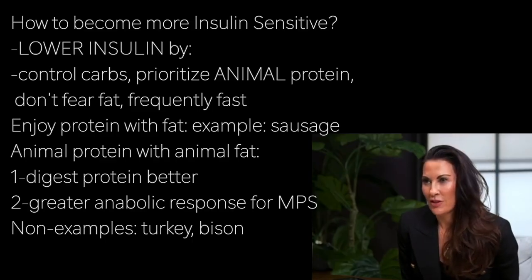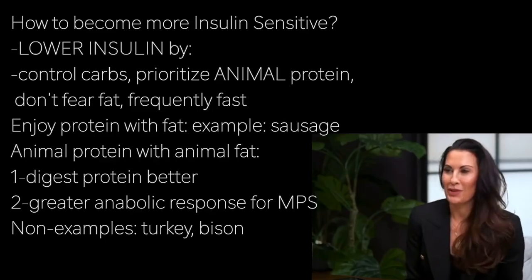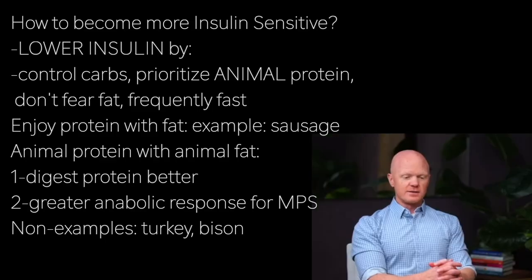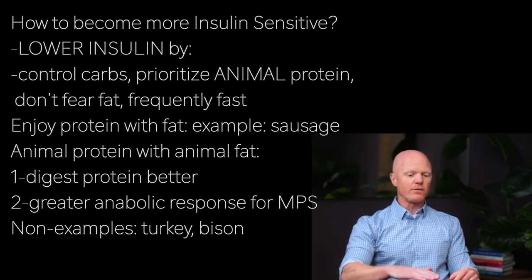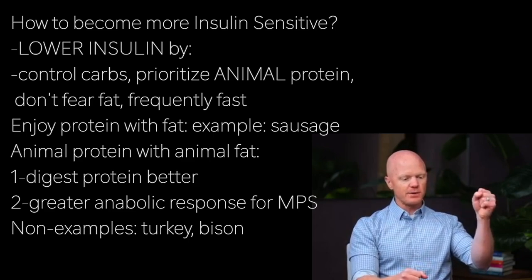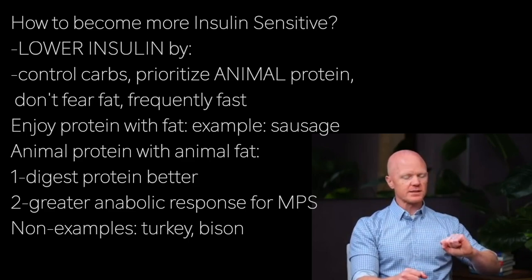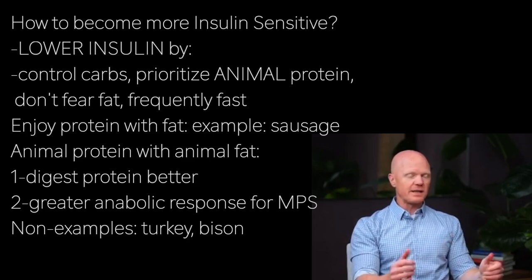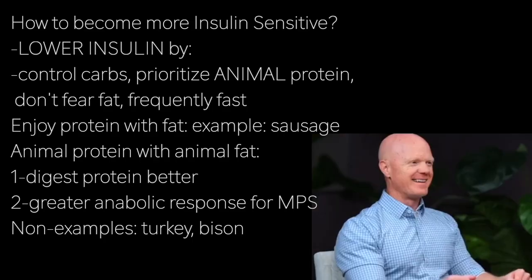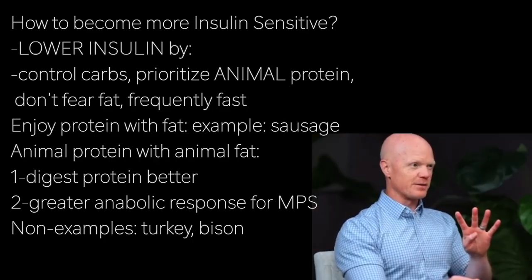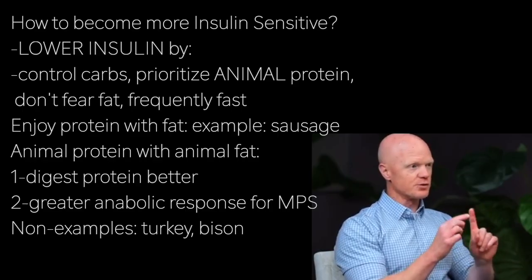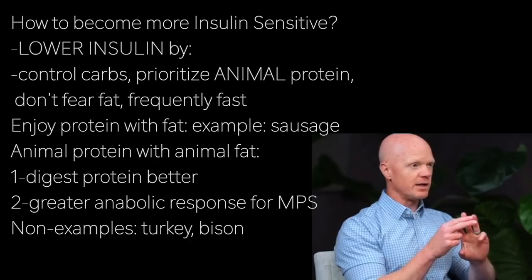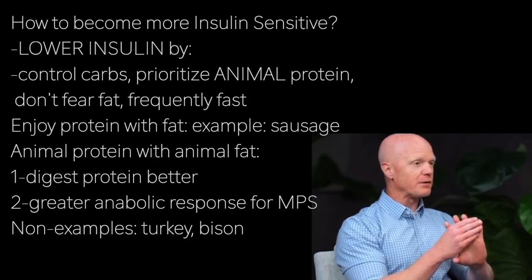How can we increase our insulin sensitivity or reduce our insulin resistance? Those mean the same thing — we just lower insulin. The most powerful lever we can grasp and pull down is lowering insulin. The best way to do that is by managing macronutrients optimally. In my view, there are four critical pillars that improve insulin resistance: three based on macronutrients and one on when not to eat them — control carbs, prioritize protein, don't fear fat, and frequently fast.